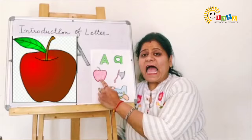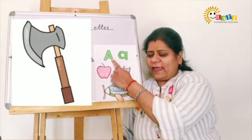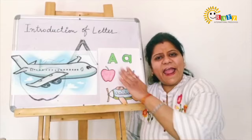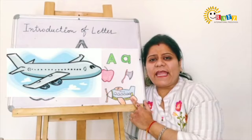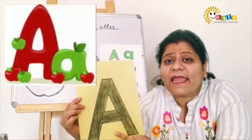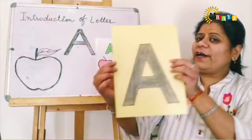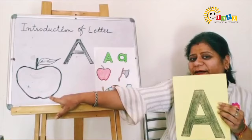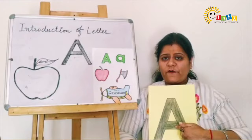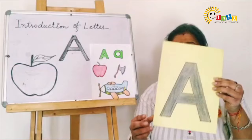A for? Apple. What is it? Apple. A for Axe. A for Axe. A for? A for? Aeroplane. A for? Aeroplane. A for? So which letter is it? Letter A. Which letter? A. A for apple, A for apple, A for ants, A for aeroplane. So which letter is it? A.